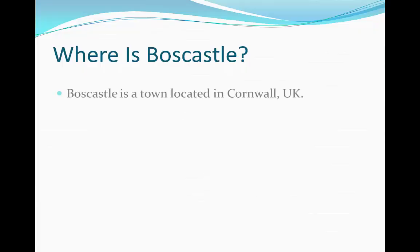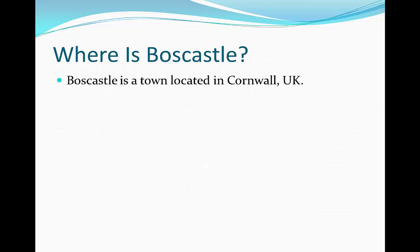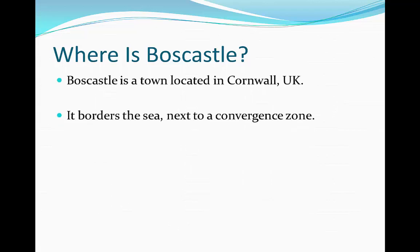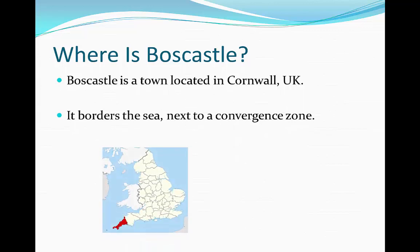Where is Boscastle? Boscastle is a town located in Cornwall in the UK. It borders the sea, which is next to a convergence zone. As you can see, Cornwall is highlighted on the map. Boscastle is located in pretty much the centre of Cornwall, but on the northern end of the frontier.